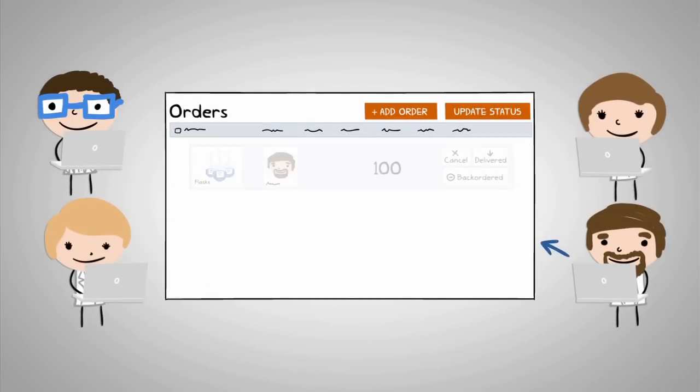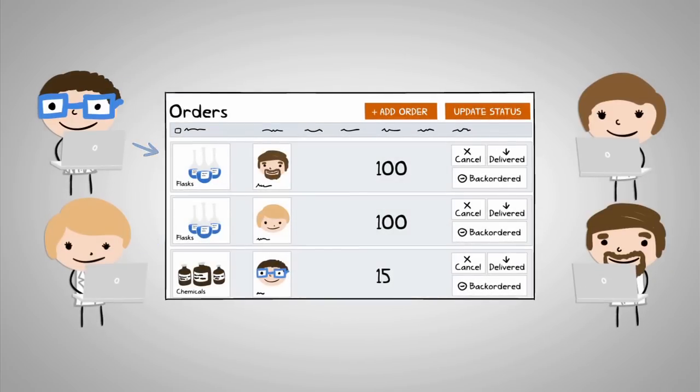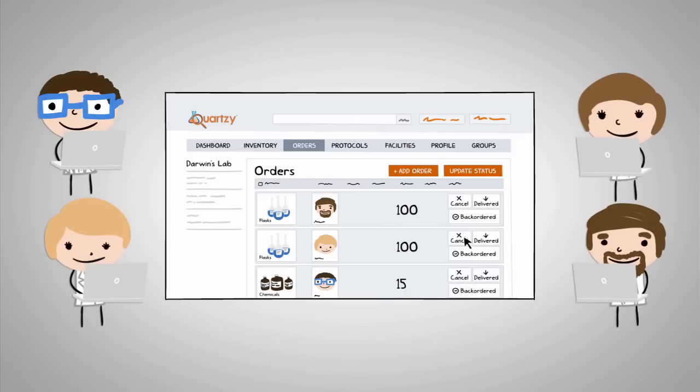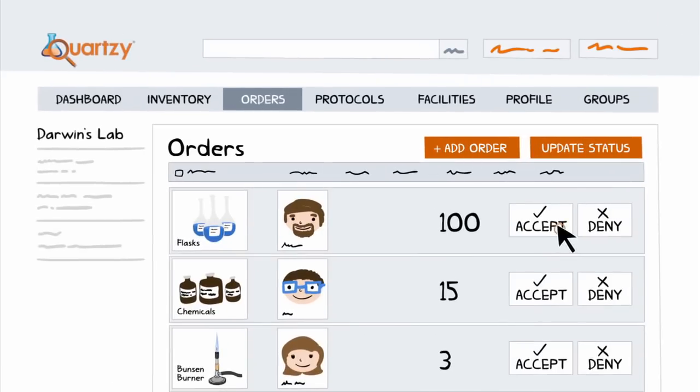With Quartsy's ordering module, all order requests are added in real-time to a single shared list. All lab members can see this list, making duplicate orders a thing of the past. Lab managers can easily accept or deny requests with just a click.